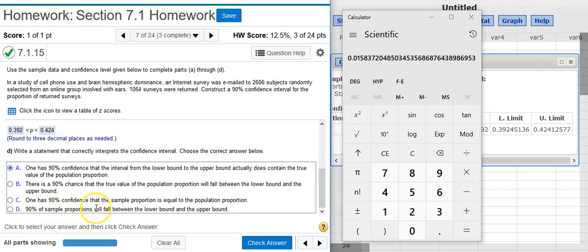One has 90% confidence that the sample proportion is equal to the population proportion. No, that's not it either. I mean, yes, proportions are unbiased estimators, and so the sample statistic will tend to target the population parameter, but that's not really the same thing as saying we're 90% confident that it's lying between an upper and lower bound.